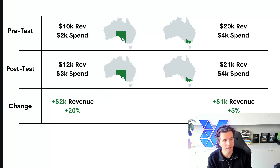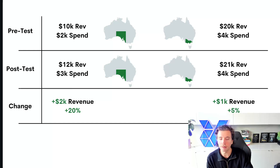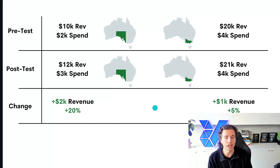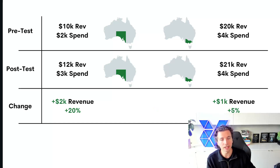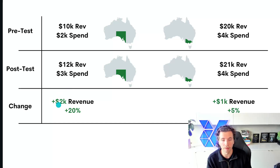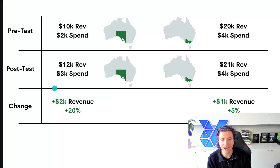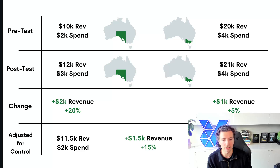In Victoria, we did nothing — this was the control group — but revenue still went up by $1,000, or 5%. This is the whole reason geolift experiments work. If you had just increased the budget for the entire country without a control group, you would have thought all of the revenue increase was caused by the spend increase — but it wasn't. The macro environment simply improved.